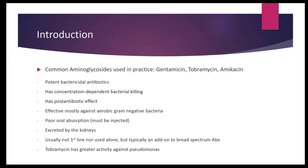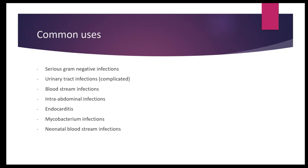Tobramycin has greater activity against Pseudomonas. So if a doctor sees a patient with a urinary tract infection growing Pseudomonas aeruginosa, resistant to most drugs except gentamicin and tobramycin, and starts gentamicin, you can easily tell the doctor that tobramycin has higher activity against Pseudomonas and suggest switching. Gentamicin is the aminoglycoside most doctors remember right away, but tobramycin does have higher activity against Pseudomonas.